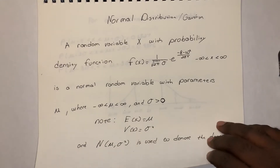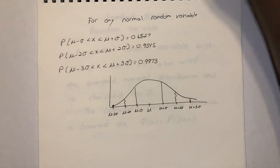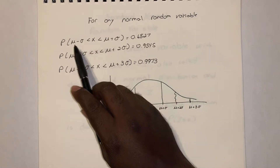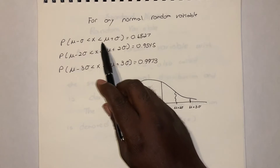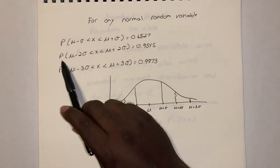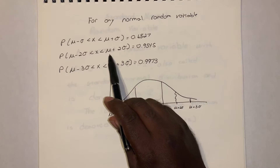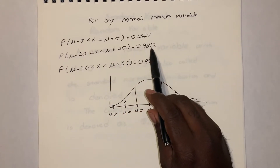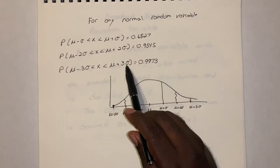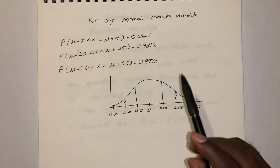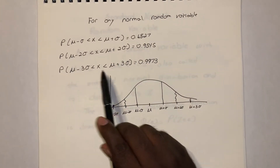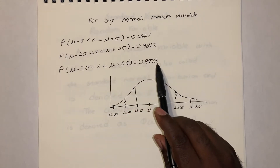For any normal distribution, the probability of μ − σ < X < μ + σ equals 0.6827. The probability of μ − 2σ < X < μ + 2σ equals 0.9545. And the probability of μ − 3σ < X < μ + 3σ equals 0.9973. So 68.27% of data falls within one standard deviation, and 99.73% falls within three standard deviations of the mean.